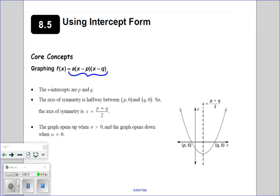So every time back in Chapter 7 when we took that trinomial and we did that magic number trick — split the middle term, factored by grouping, and rewrote that trinomial as a product of two binomial factors — this is what you were getting. And we knew that once we had those binomial factors, we could set each factor equal to zero and find those x-intercepts, those zeros, those roots. So all intercept form is, is just the factored version of our quadratic equation.